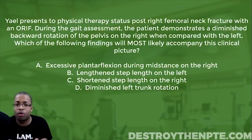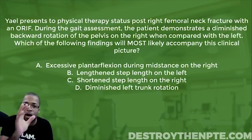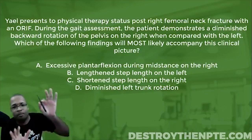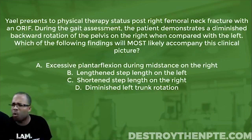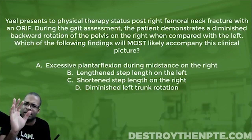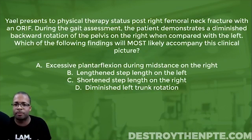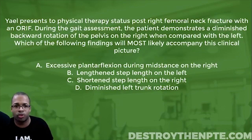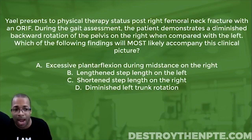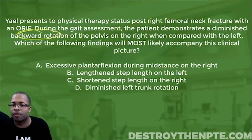You also have tilting the pelvis side to side in the coronal or frontal plane — known as pelvic hiking. So to summarize: anterior and posterior pelvic tilt is sagittal, forward and backward rotation of the pelvis is transverse, and pelvic hiking or depression is frontal. For this question, we are talking about backward rotation of the pelvis on the right in the transverse plane.